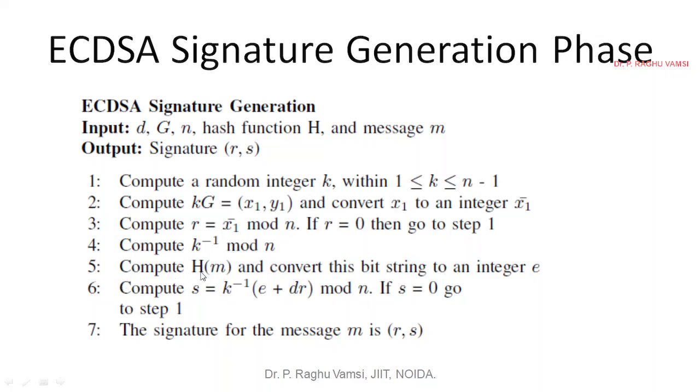Next compute the hash of m. We have to consider SHA256. This SHA256 performs cryptographic hashing with the message m and convert this whatever message you got, convert it into an integer value e. The message will be generated in hexadecimal form and this will be converted into the bit string, into the integer form.